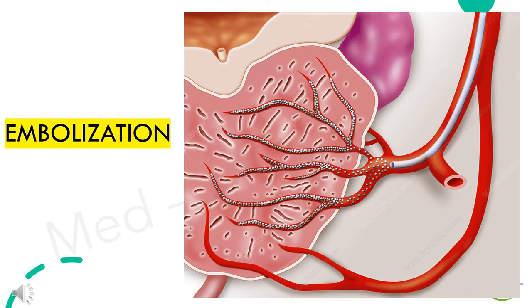The next procedure is embolization. In this procedure, the blood supply to or from the prostate is selectively blocked, causing the prostate to decrease in size.